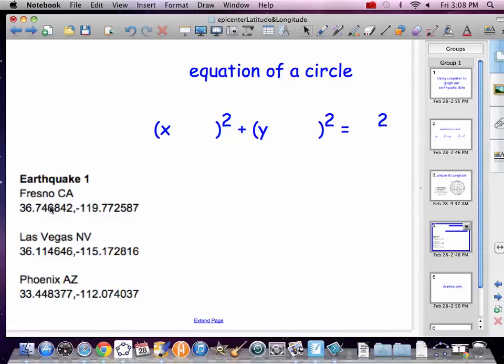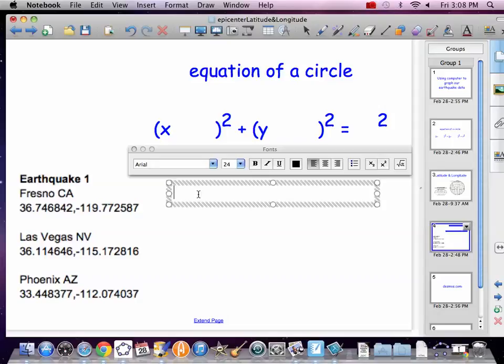It's always north, south, and then east, west. So the 36 is actually y. So let us enter our equations here, and we will have parentheses x minus a negative 119.8.